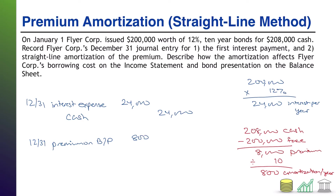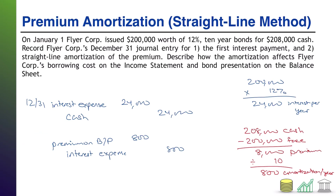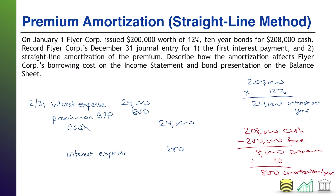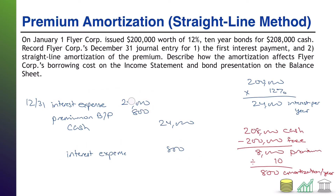What this premium does — because investors gave us more money than we are actually going to have to pay them back — this premium is saving us cost. The way we recognize that savings is we are going to reduce interest expense by $800. For illustrative purposes I showed these as two separate journal entries, but merging them together: we put the premium debit up top, and notice we already have interest expense in that first entry — we're just lowering it by $800, so this becomes $23,200. Now I've merged the interest piece with the amortization piece.